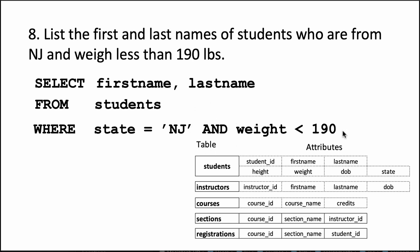Notice that we've got quotes around NJ but no quotes around 190. That is because state is a character column, and when you are talking of values in a character column you have to put them in quotes. But when you are talking of values in numeric columns you don't put quotes. So that's about question number 8.